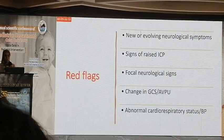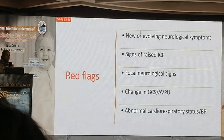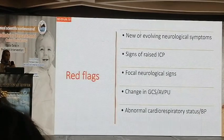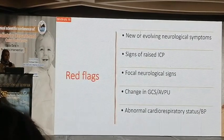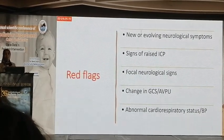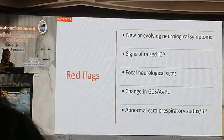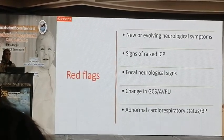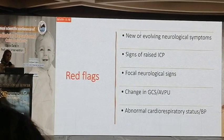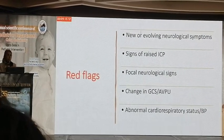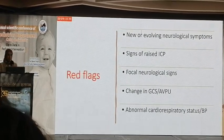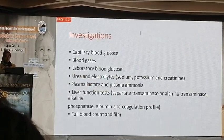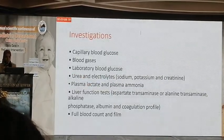What are the red flags to search for in a patient presenting with a disturbed conscious level? The red flags are the presence of new or evolving neurological symptoms, signs of raised intracranial pressure, poor prognostic signs, changes in the Glasgow Coma Score or AVPU score, and the presence of abnormal cardiac or respiratory status or blood pressure.